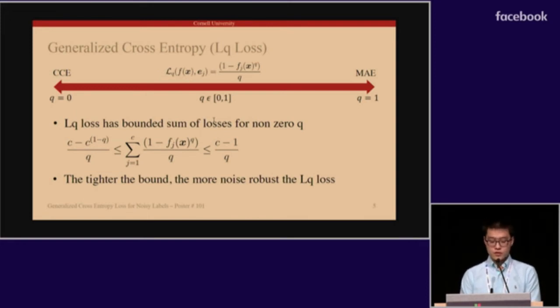Although L_q loss is not symmetric, it has bounded sum of losses for non-zero q's, and the larger the q value, the tighter the bound. In this work, we showed that the tighter the bound, the more noise-robust the loss function.